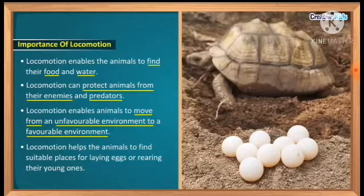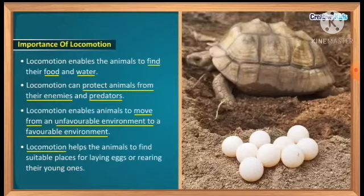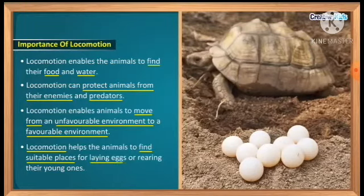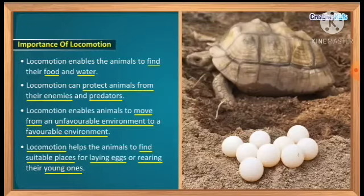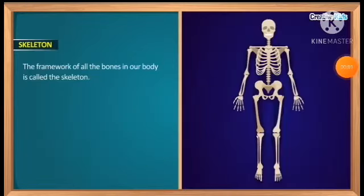Fourth: locomotion helps animals find a suitable place for laying eggs or rearing their young ones. All animals need a suitable place to lay eggs and rear their young ones, so through locomotion they move to a suitable place to lay eggs or rear their young.